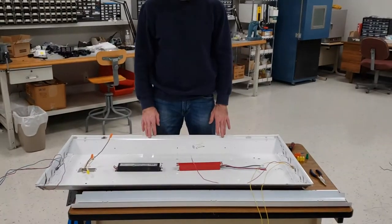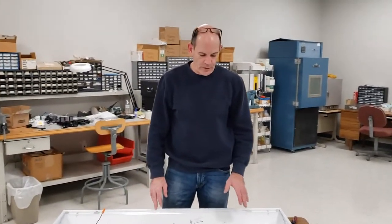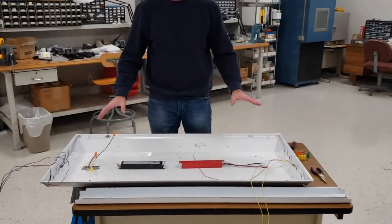Today we're doing an EMB replacement on a 4-2 fluorescent fixture. For ease of showing, we've taken it out of the ceiling and put it on the table for you today.